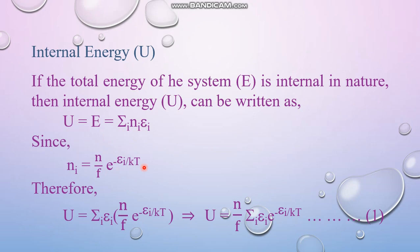Therefore U can be written as, in place of N_i we can write N by F e to the power minus epsilon_i by kT.